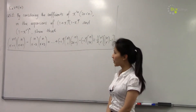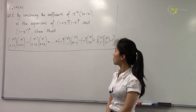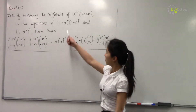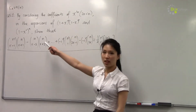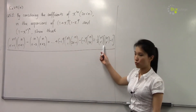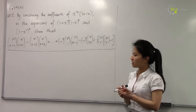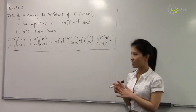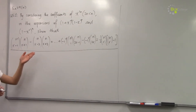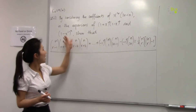So here's question 52. By considering the coefficients of x to the power of 2r, where 2r is less than n, in the expansion of this and 1 minus x to the power of n, show this relationship is true. This is actually a very difficult question, so let's have a look at how to do this. First of all, we have to consider the coefficient of x to the power of 2r in the expansion of both expressions.